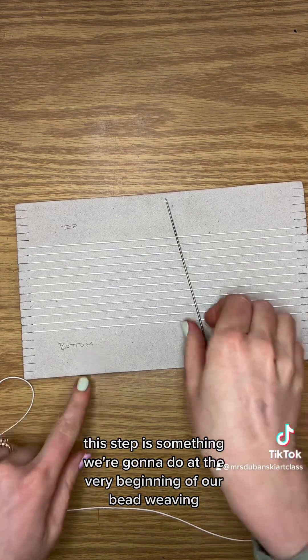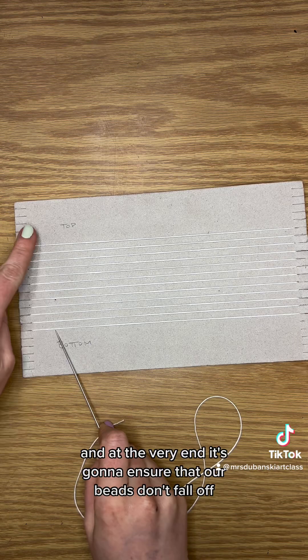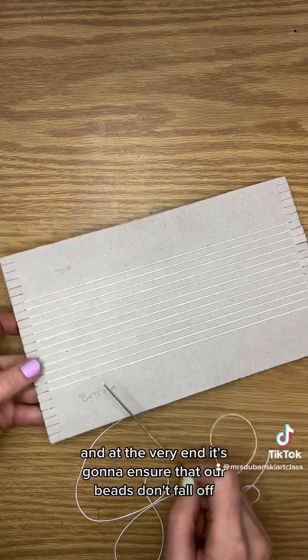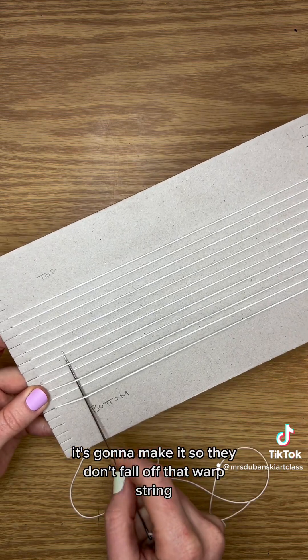This step is something we're going to do at the very beginning of our bead weaving and at the very end. It's going to ensure that our beads don't fall off after we're totally done with the weaving. It's gonna make it so they don't fall off that warp string.